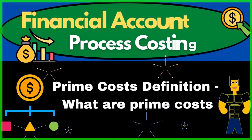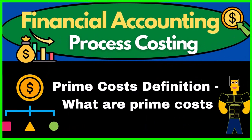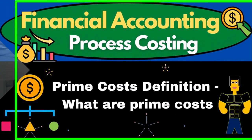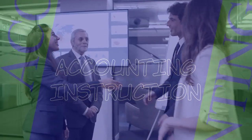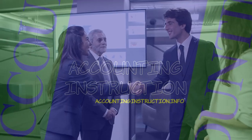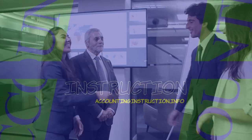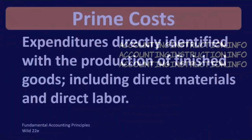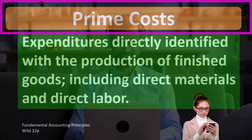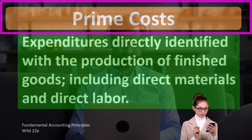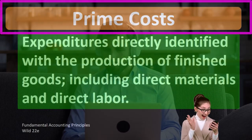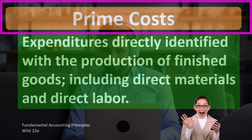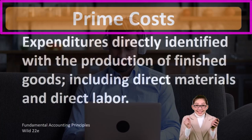Hello. In this lecture we will define prime costs. According to Fundamental Accounting Principles, Wild 22nd Edition, the definition of prime costs is expenditures directly identified with the production of finished goods, including direct materials and direct labor.